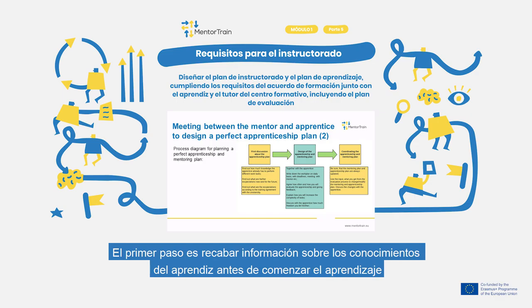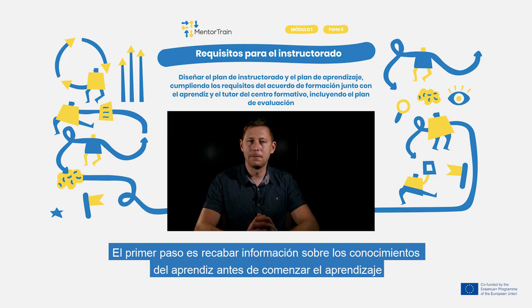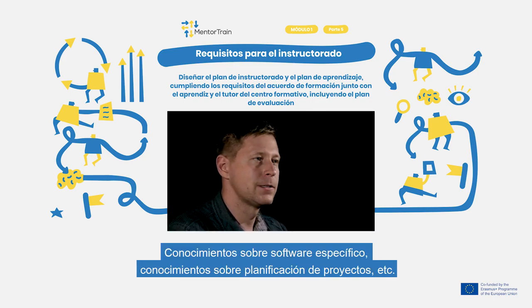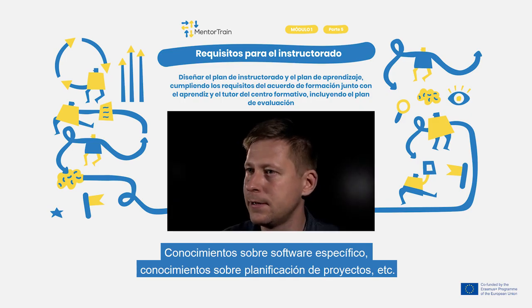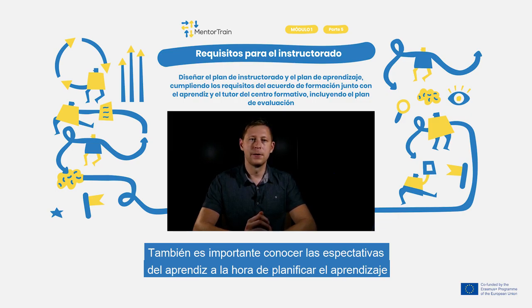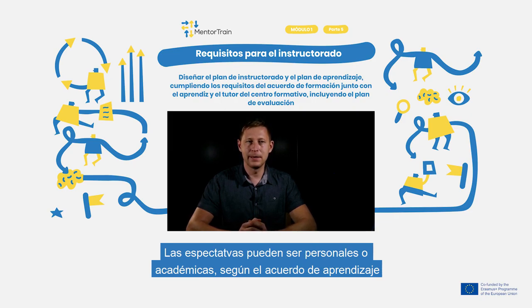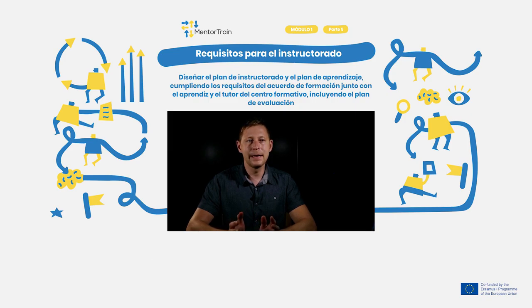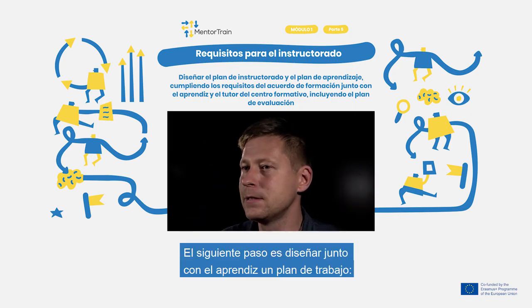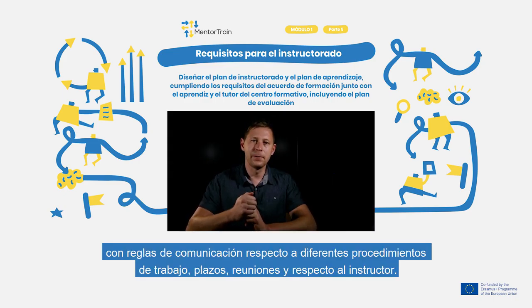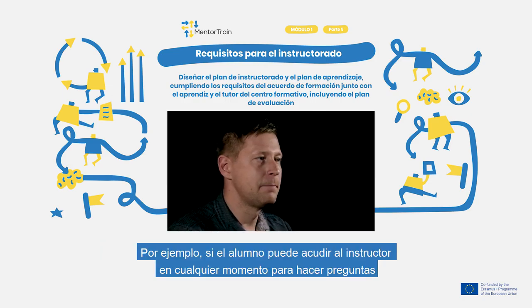Firstly, we must find out how much knowledge the apprentice already has to perform different work tasks, like knowledge about special software, planning projects, etc. It's important to find out the expectations of the apprentice and use that for planning the apprenticeship. And it's very important to explain the expectations of the company to the apprentice too. Expectations can be personal and academic according to the training agreement. The next step is to write down together with the apprentice a work plan on a daily basis with rules for different work procedures, deadlines for tasks, meetings, and communication rules with the mentor — for example, whether the apprentice can come to the mentor at any time to ask questions or not.